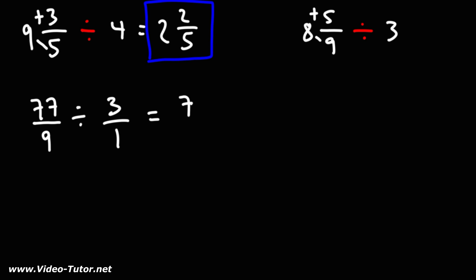Using keep, change, flip, we're going to keep the first fraction the same, change division to multiplication, and then flip the second fraction. 77 doesn't have any common factors with 9 and 3. So we're just going to multiply across.